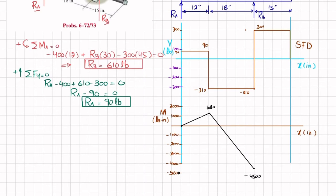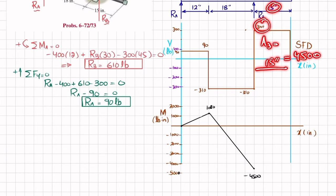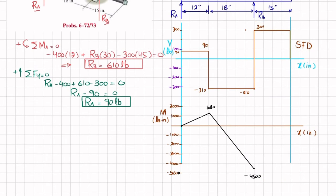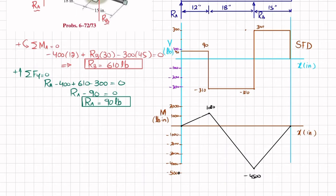The last area A3 equals 300 times 15 inches equals 4500 pound-inches. So the moment returns to minus 4500 plus 4500 equals zero. The shear is positive and horizontal so the bending moment is linear with increasing slope. This completes the bending moment diagram.